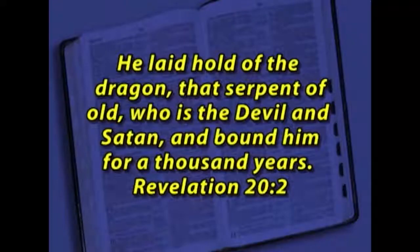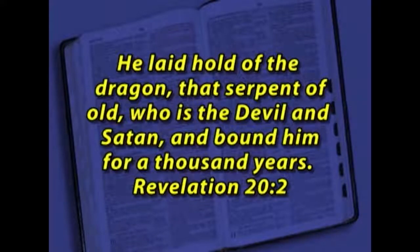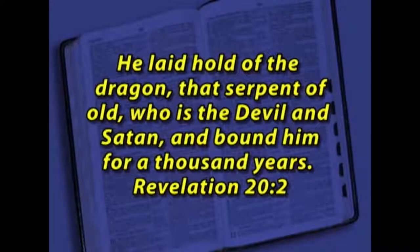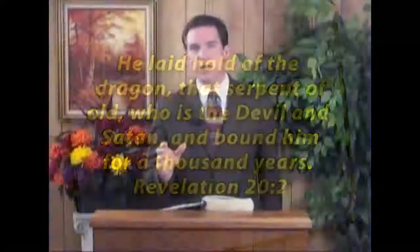That is a big help in understanding the book of Revelation. Toward the end of the book, the dragon is also identified. Look at Revelation chapter 20, verse 2: 'He laid hold of the dragon, the serpent of old, who is the devil and Satan, and bound him for a thousand years.' So here you have God binding Satan, the dragon, for a thousand years. When we come to the book of Revelation, let's understand this mythical figure of a dragon represents the devil, the most fearful adversary man has.